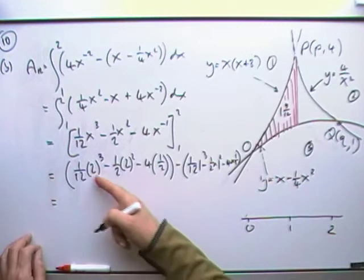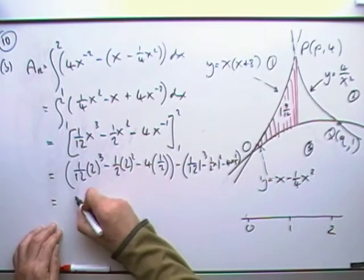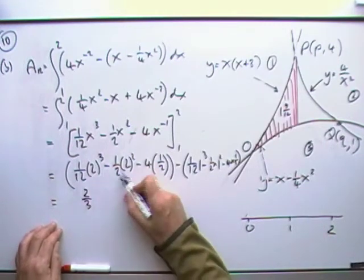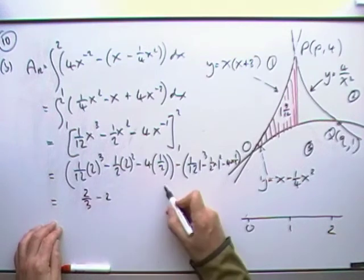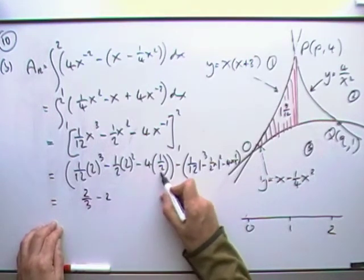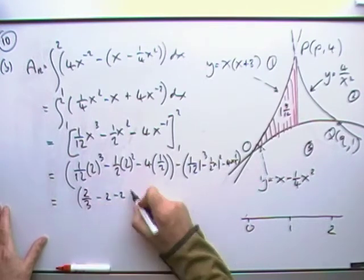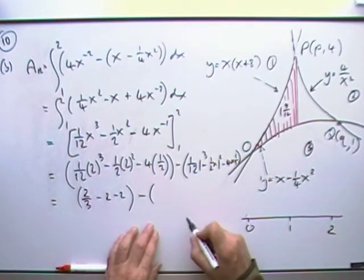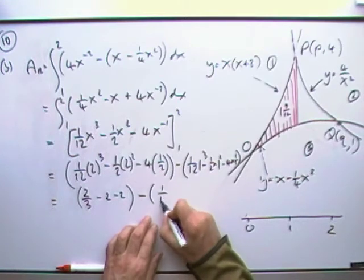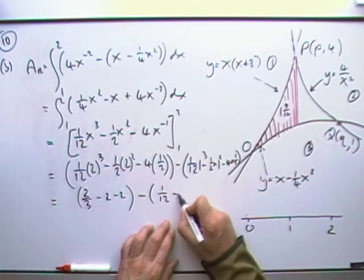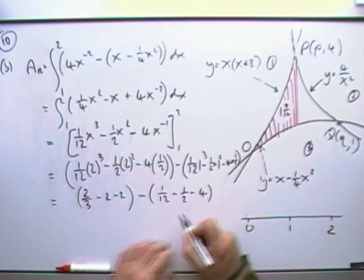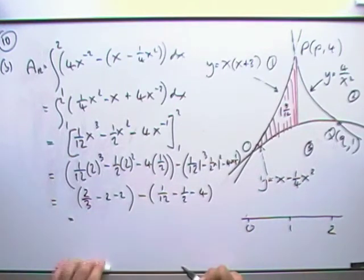So what's this lot then? I've got 8 twelfths, so that's 2 thirds. I've got half of 4, so that's 2. I've got, again, a half of 4, so that's another 2. This side, I've got a 12th, I've got a half, and I've got 4.